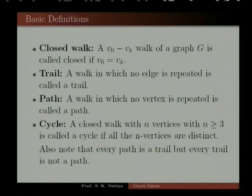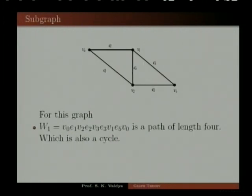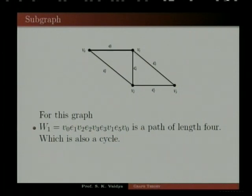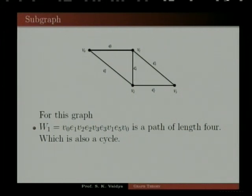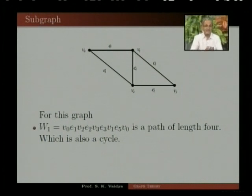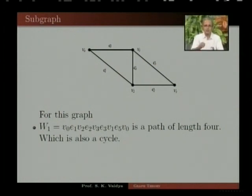We will understand these definitions using a graph on 4 vertices with 5 edges. Consider walk W1: V0, E1, V2, E2, V3, E3, V1, E5, V0. This walk has length 4, is a closed walk, and is also a cycle because no vertex is repeated and the terminus equals the origin.